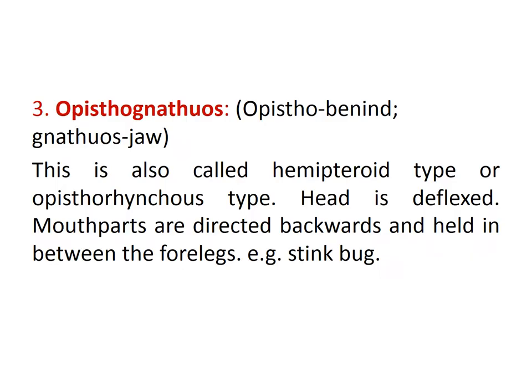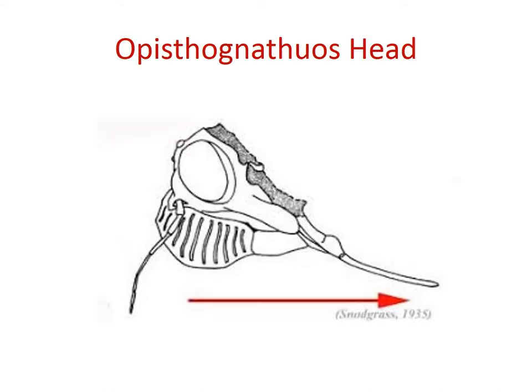The third type is opisthognathous — 'opiso' means behind, 'gnathus' means jaw. This is also called the hemipteroid type. The head is deflexed and mouth parts are directed backward, held between the forelegs. Examples are stink bugs, and many hemipteran insects have opisthognathous head. Here we can see the opisthognathous head of a bug.